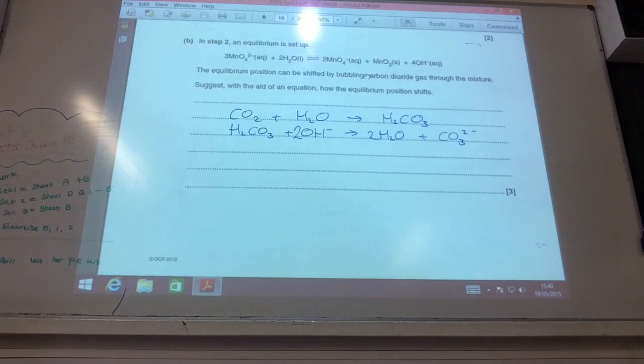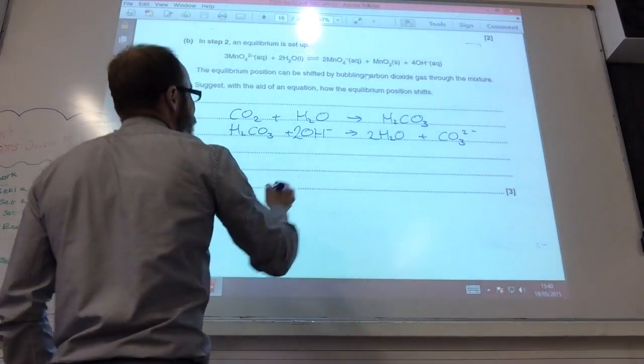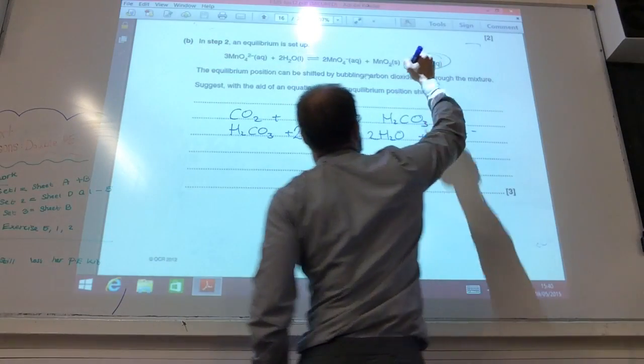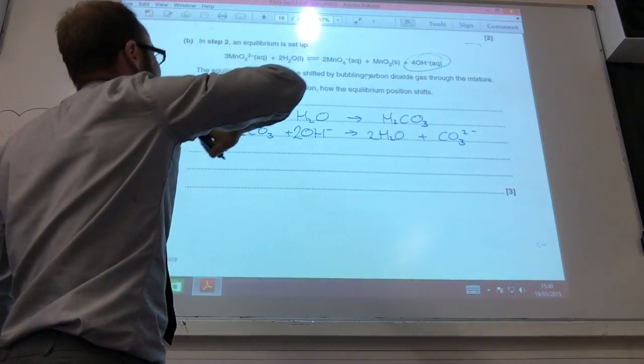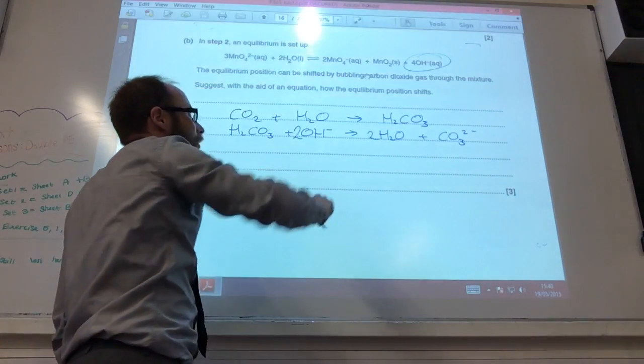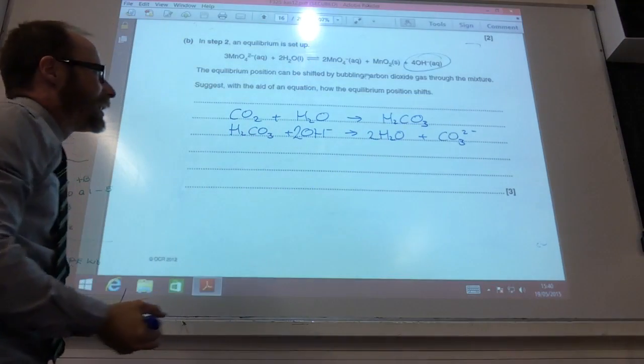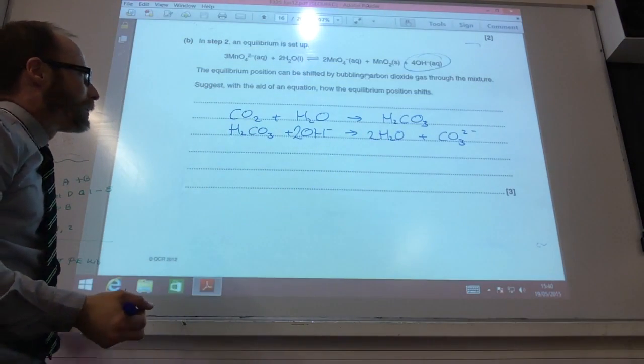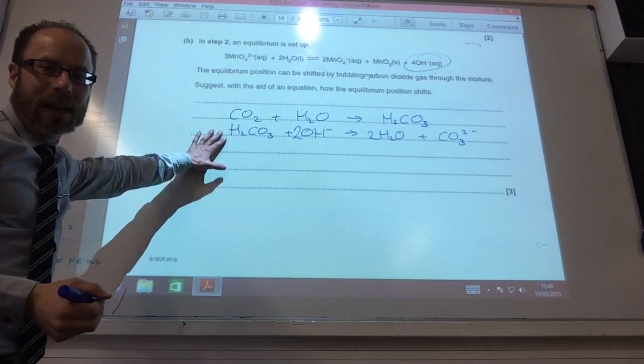To give me water plus CO3 2 minus, like so. So therefore, I have removed hydroxide ions from the equilibrium, which means it will shift to the right hand side to replace or replenish the hydroxide ions that have been used up in this reaction here.